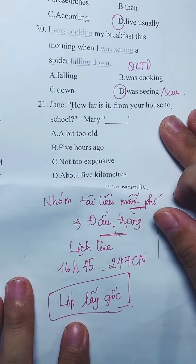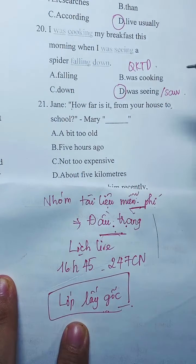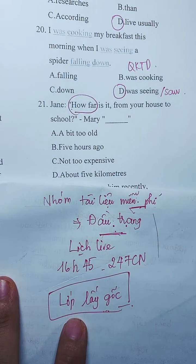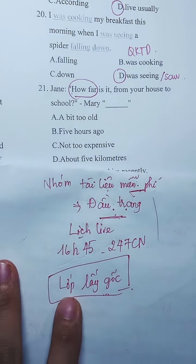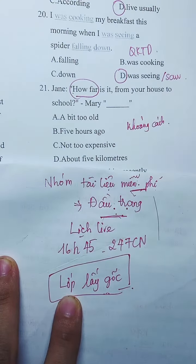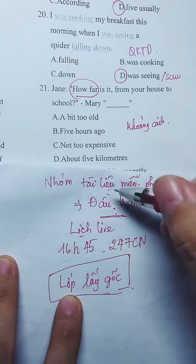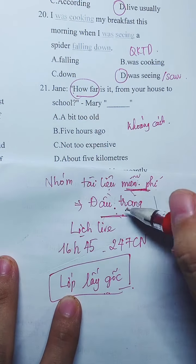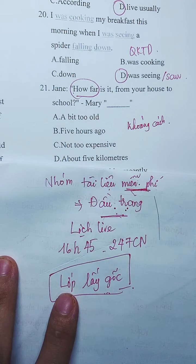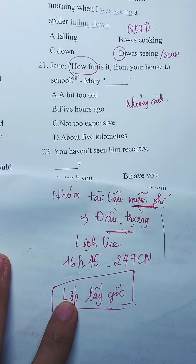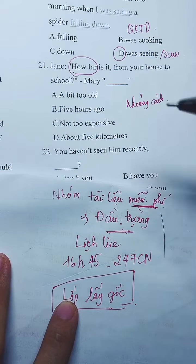'How far' là hỏi về khoảng cách. Câu 21 hỏi khoảng cách thì trả lời là một khoảng cách bao nhiêu km. Đáp án D chính xác - hỏi khoảng cách từ nhà tới trường, người ta trả lời là khoảng 5km.